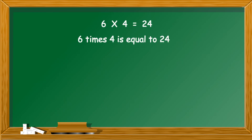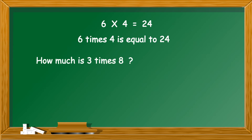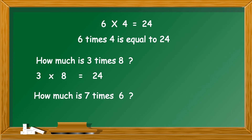The next method of reading a multiplication statement is: 6 times 4 is equal to 24. The term to be noted here is 'times,' which indicates multiplication. For example, how much is 3 times 8? Multiply 3 into 8, which is equal to 24. Another example: how much is 7 times 6? Multiply 7 into 6. If you do not know the tables of 7, just interchange the multiplicand and multiplier — it becomes 6 into 7, which is equal to 42.